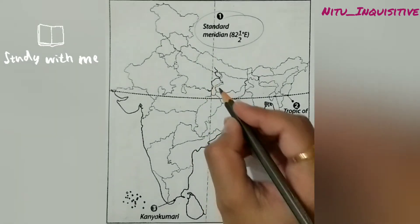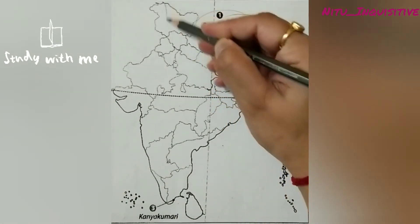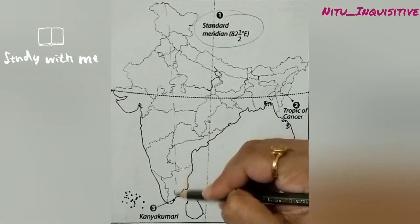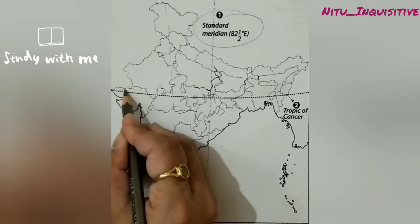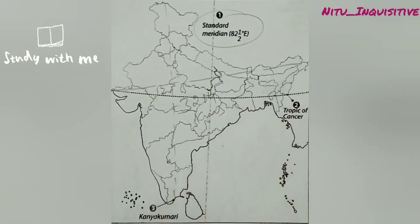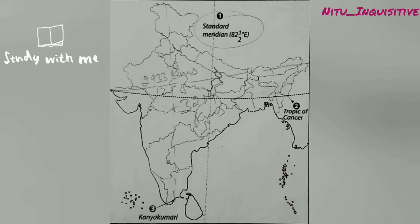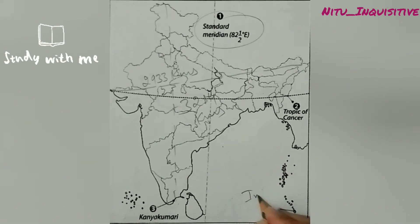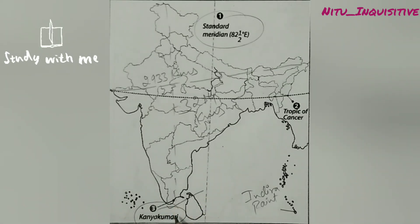If you want to be more precise, the standard meridian passes through Naini. Now, the north-to-south extent of India is about 3,214 kilometers, whereas the west-to-east extent of India is 2,933 kilometers. The southernmost point of India is Indira Point, but the southernmost point of mainland India is Kanyakumari.